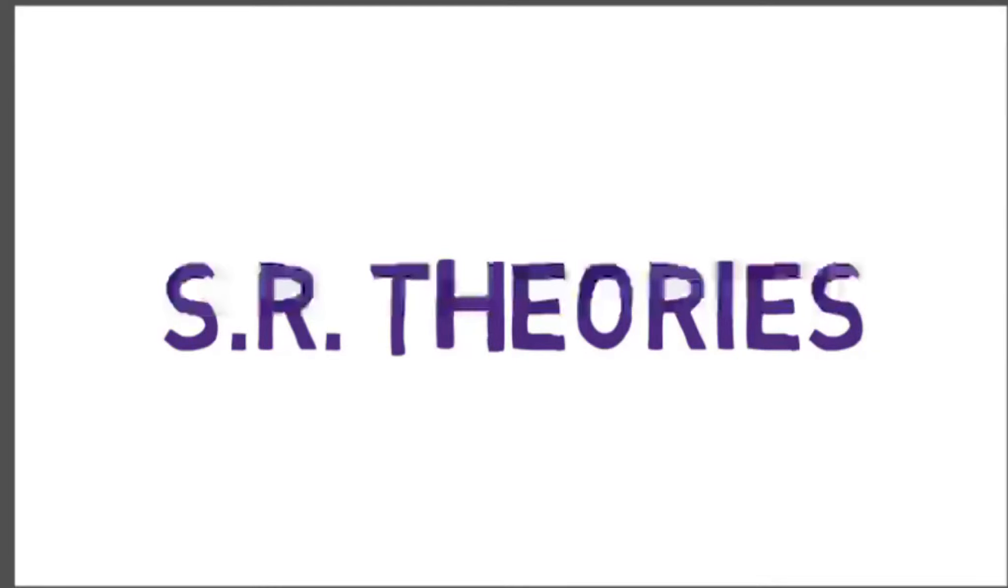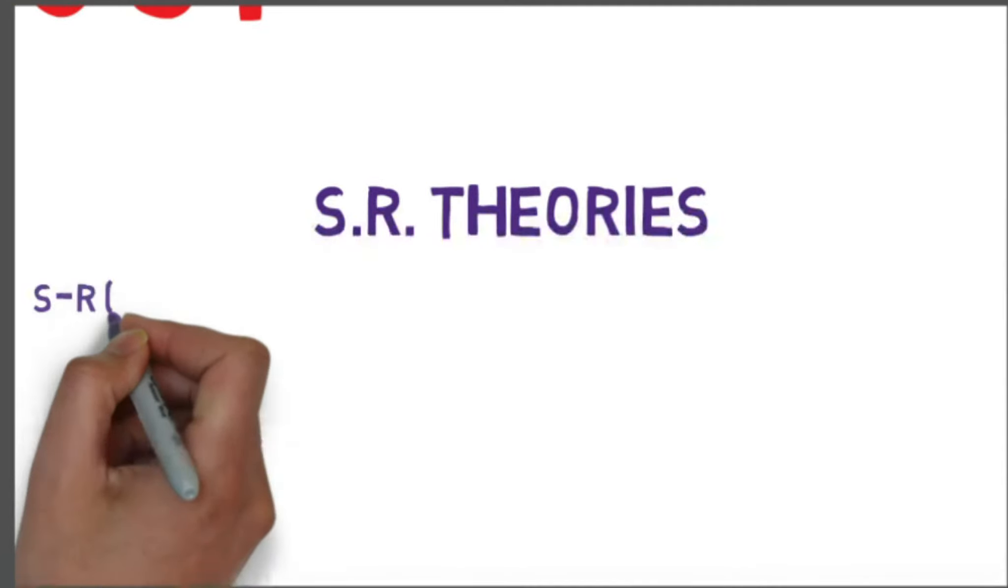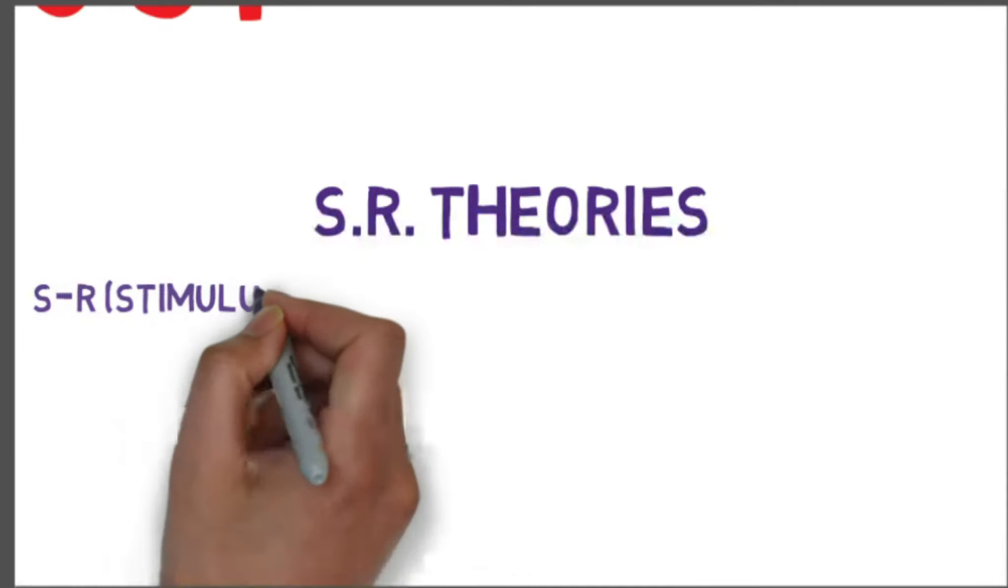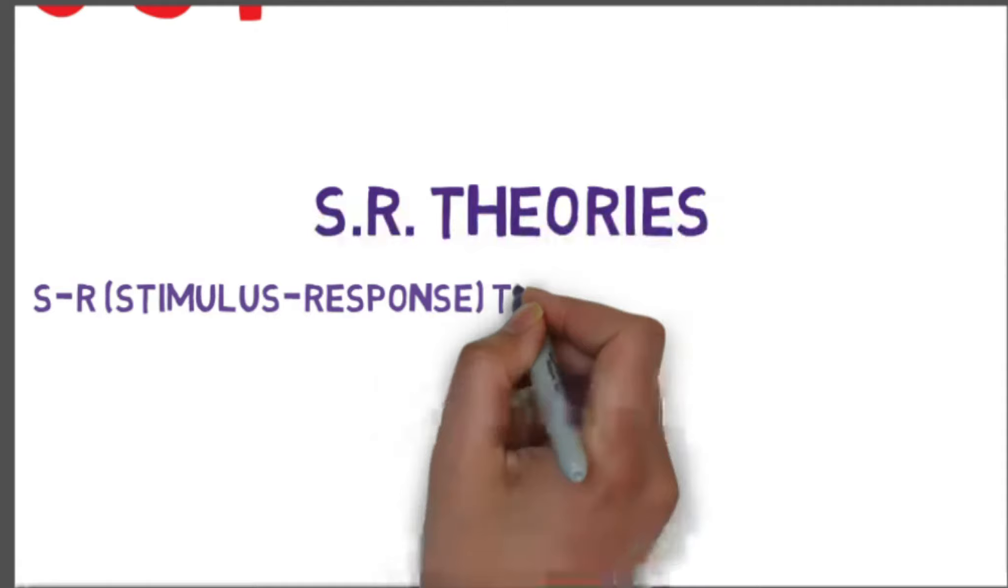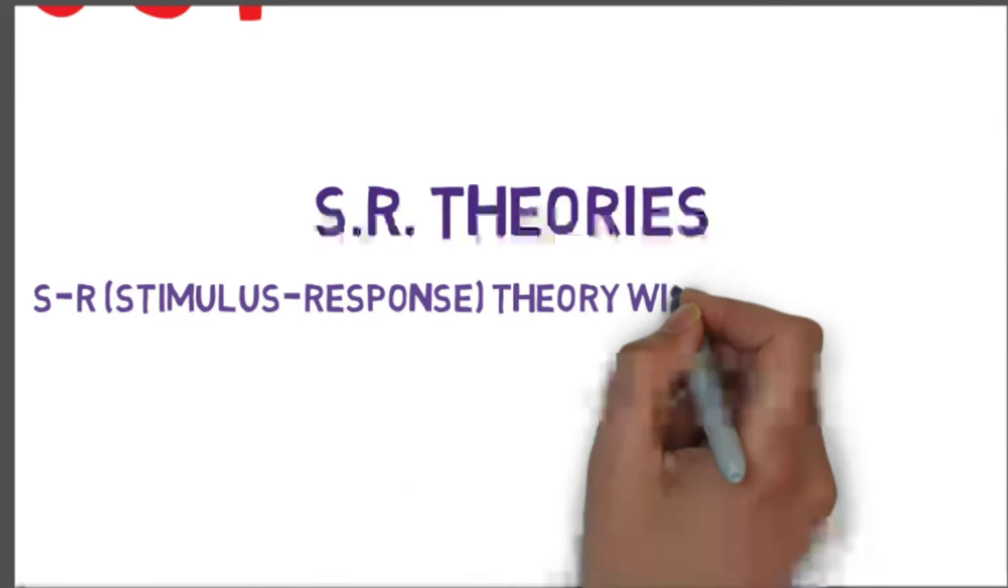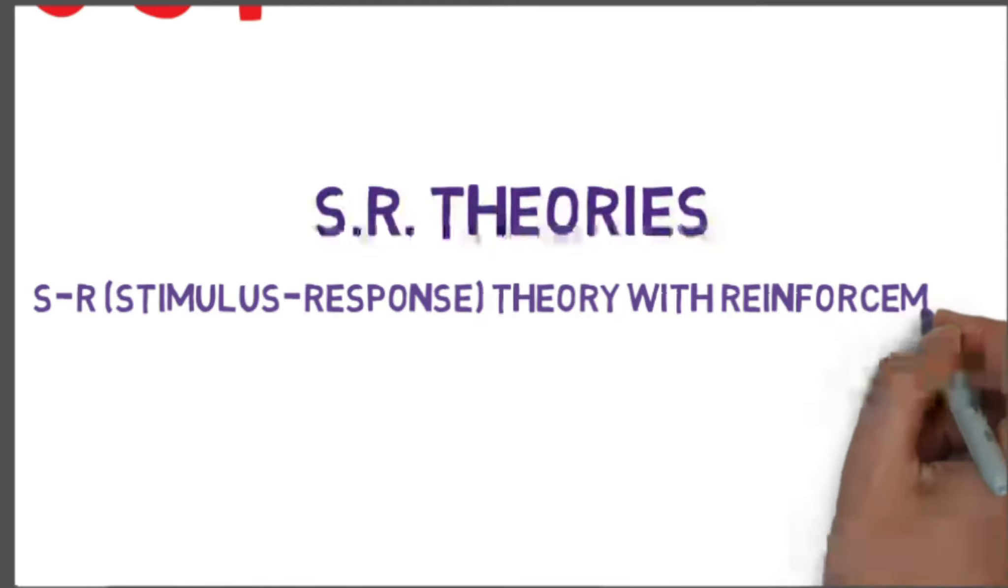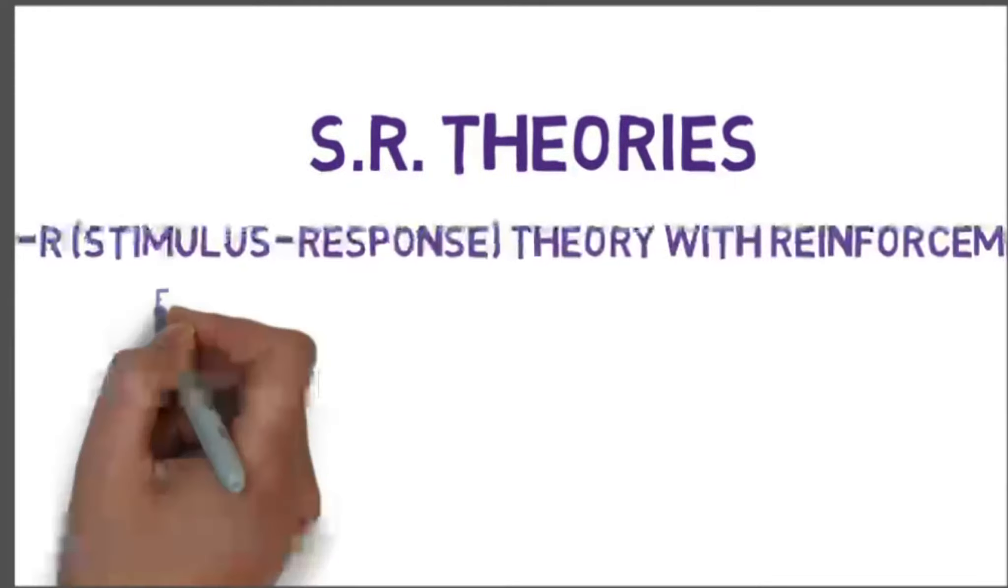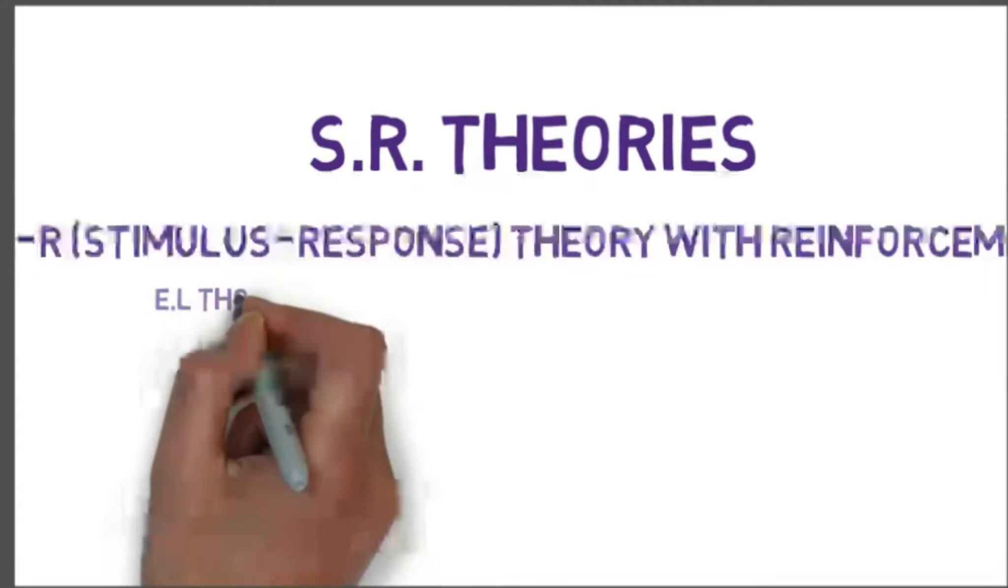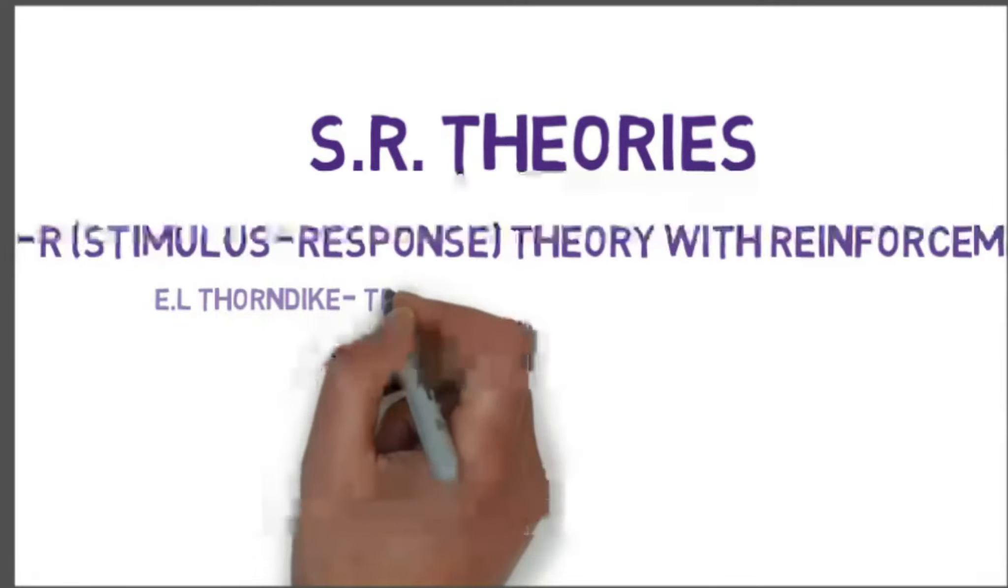Stimulus-response theory with reinforcement starts with Thorndike, the trial and error theory of learning. Thorndike, born in 1874 and died in 1949, was the first American psychologist who put forward the trial and error theory of learning. According to Thorndike, all learning takes place because of a formation of bond, or connection, between the stimulus and the response. He further says that learning takes place through a process of approximation and correction.